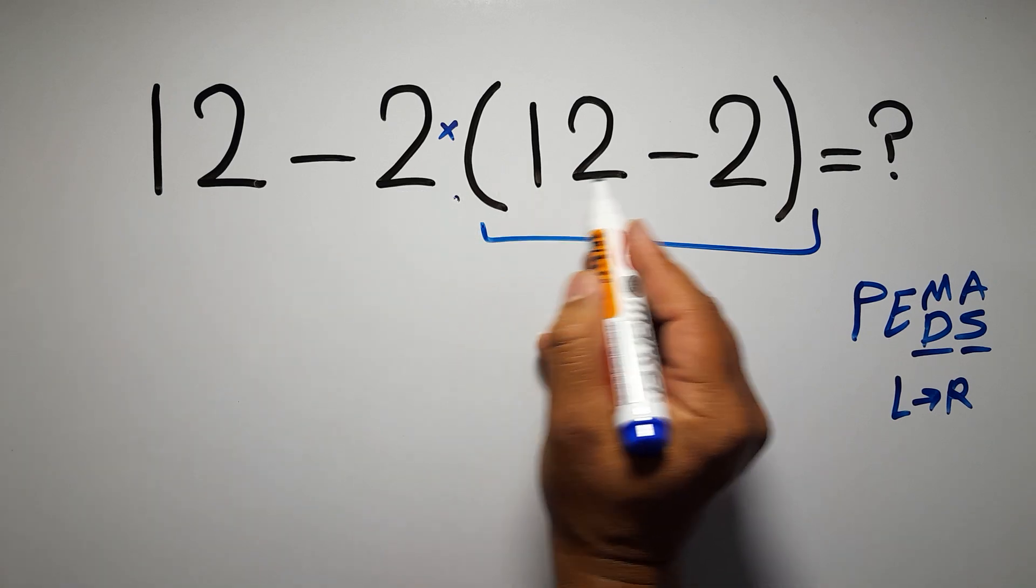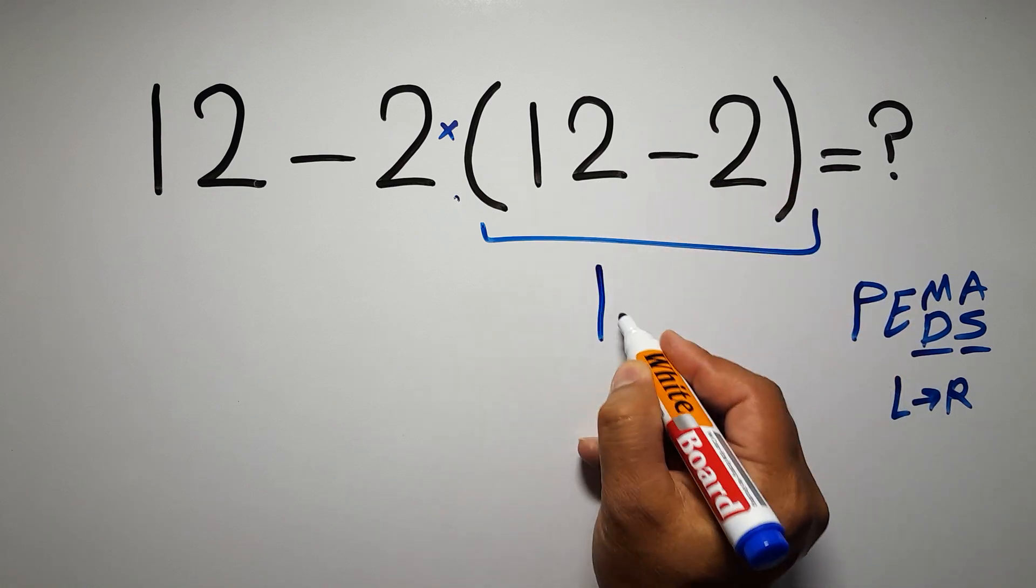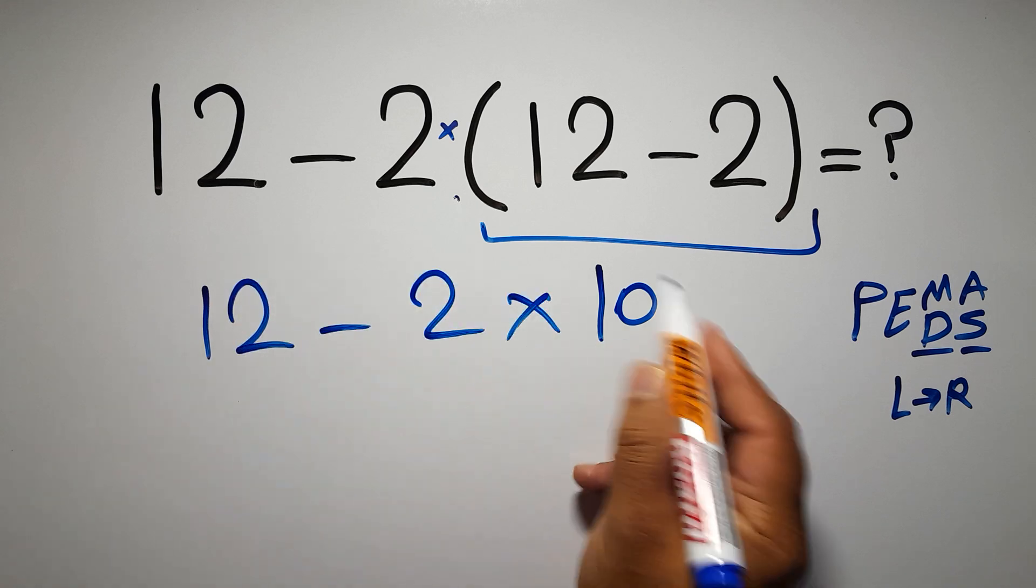First we must do this parentheses. 12 minus 2 gives us 10. So we have 12 minus 2 times 10.